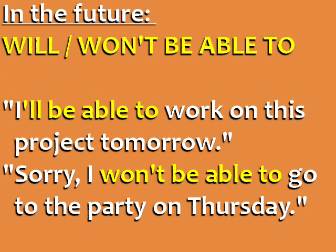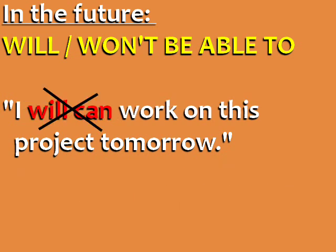In the future, there is only one option: will or won't be able to. For example: I'll be able to work on this project tomorrow. Sorry, I won't be able to go to the party on Thursday. Don't say "will can" — this doesn't exist, and it's another common error.